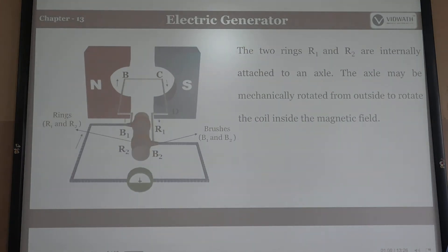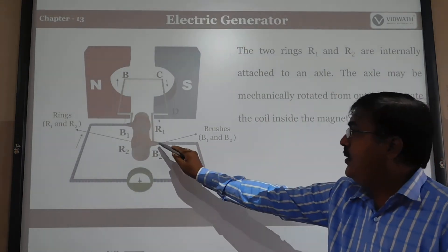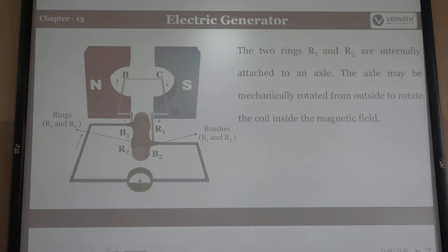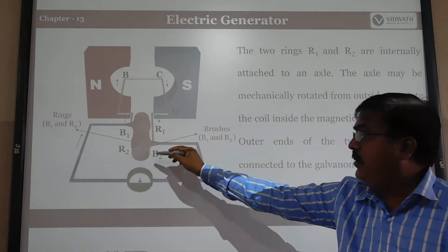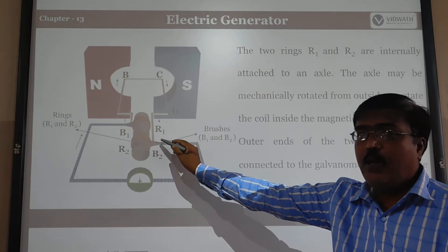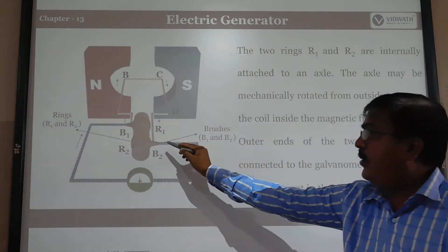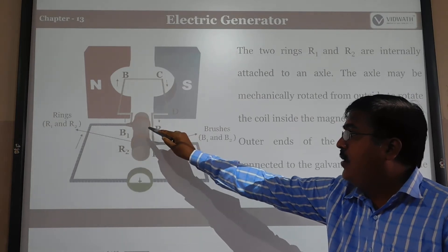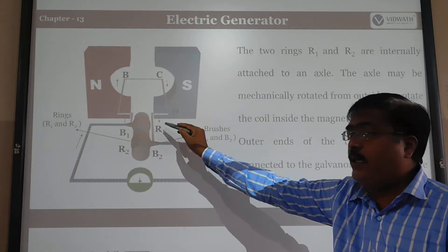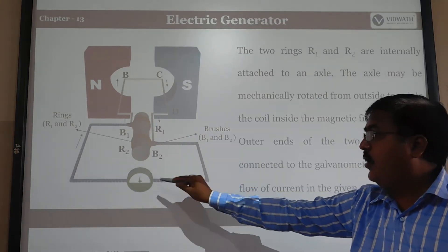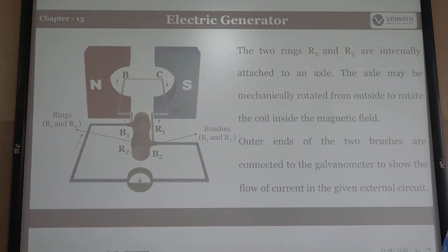The two rings R1 and R2 are internally attached to the axle. The axle is mechanically rotated. When rotation starts, arm AB moves to the upper side and arm CD moves to the lower side. The rings also start rotating. The outer ends of the two brushes are connected to the galvanometer to show the flow of current in the external circuit.